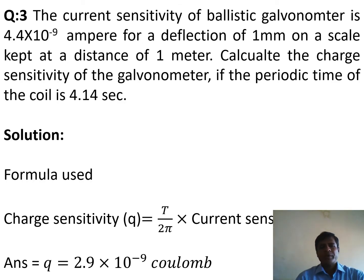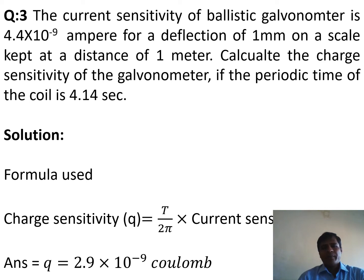Question number 3: The current sensitivity of a ballistic galvanometer is 4.4 × 10⁻⁹ ampere for a deflection of 1 millimeter on a scale kept at a distance of 1 meter. Calculate the charge sensitivity of the galvanometer if the periodic time of the coil is 4.14 seconds.